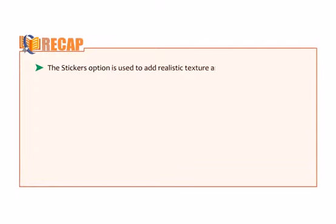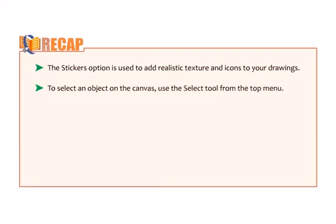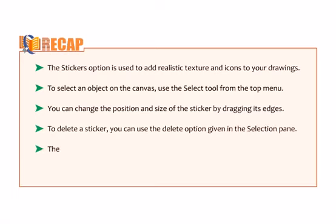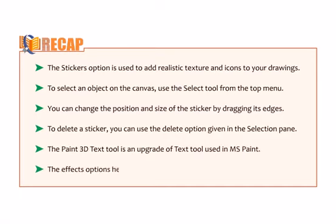Okay students, let us take a recap of this chapter. The Sticker option is used to add realistic texture and icons to your drawings. To select an object in the canvas, use the Select tool from the top menu. You can change the position and size of the sticker by dragging its edges. To delete a sticker, you can use the Delete option given in the selection pane. The Paint 3D text tool is an upgrade of the text tool used in MS Paint. The Effects option helps us to enhance the appearance of the objects.